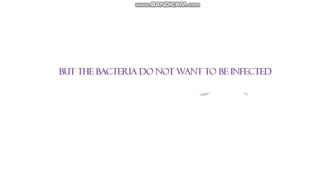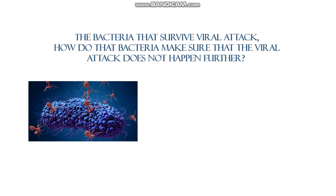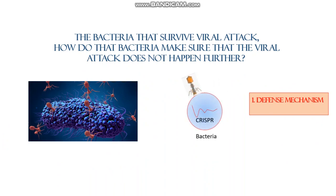The bacteria do not want to be infected, and this is why bacteria use several protective defense mechanisms against viral attack. Let's look at what kind of defense mechanisms they have and how bacteria that survive viral attack make sure that the viral attack does not happen further. The number one defense mechanism is the CRISPR-Cas9 system, which ensures the viral attack does not happen further.